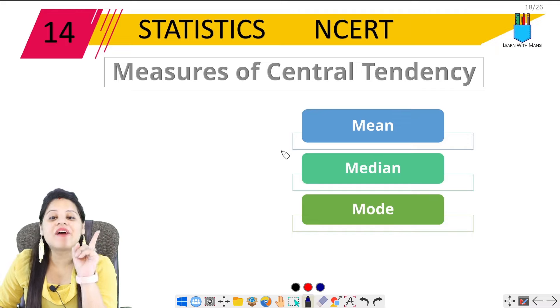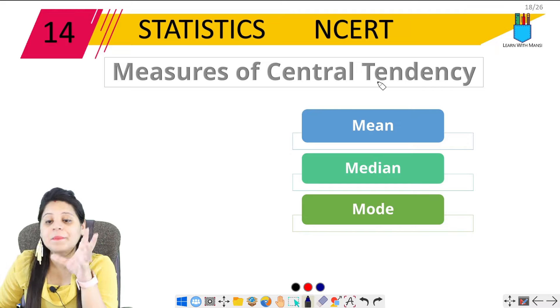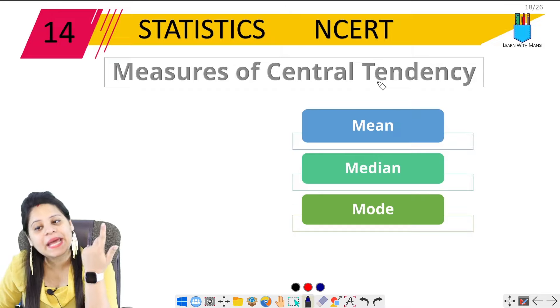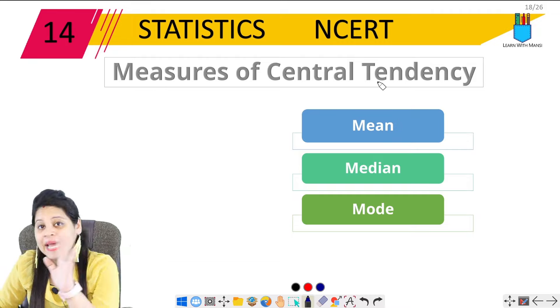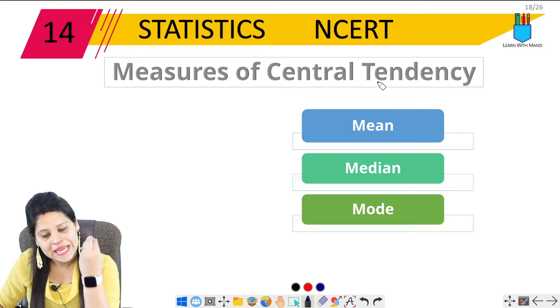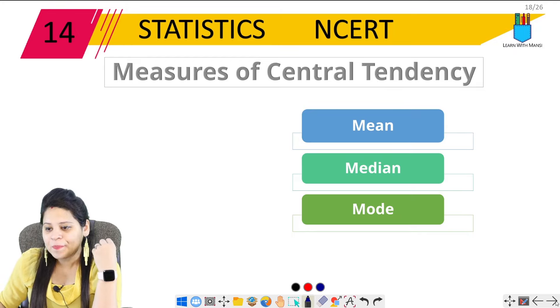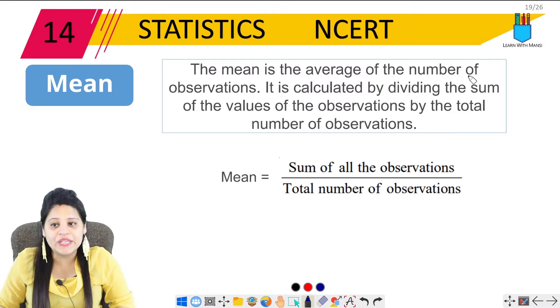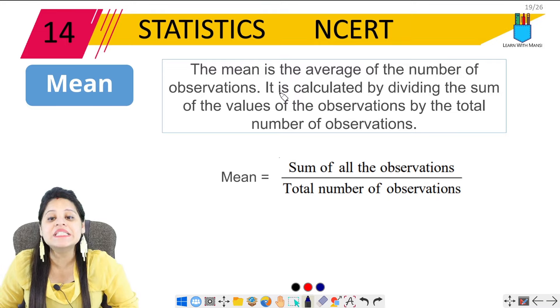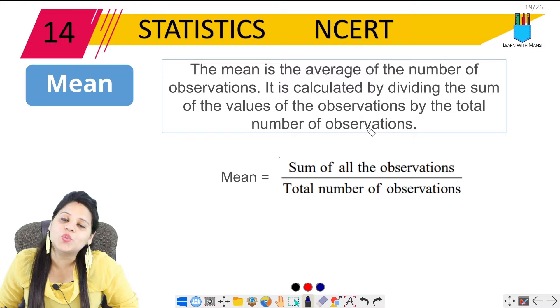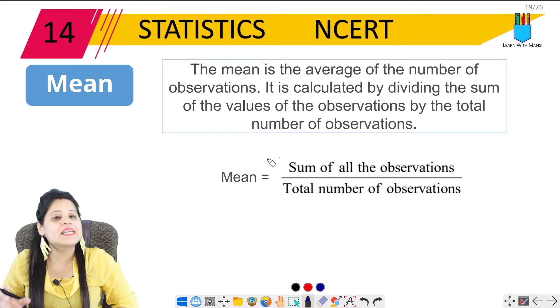So now the next topic we have is Measures of Central Tendency. There are some measures of Central Tendency such as mean, median and mode. These are the three things we will discuss, basically what are used for the data for some useful information. So the first thing we have is mean.